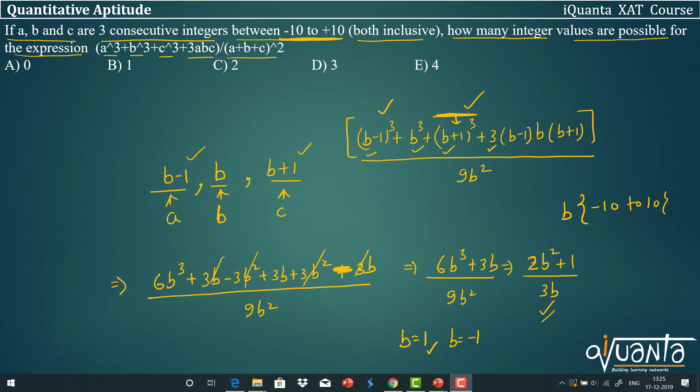So there are only two integer values of this expression possible, and they will be possible when B = 1 and -1.